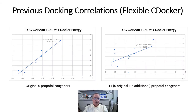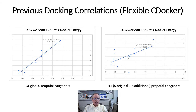In particular, for the results of the flexible C-Docker calculations on the left, the original six propofol congeners showed a very high correlation of the log of EC50 for GABA potentiation versus the C-Docker-derived interaction energy. However, when adding five more propofol congeners, it was clear that the use of the approximate methods implemented in the flexible C-Docker algorithm began to break down.